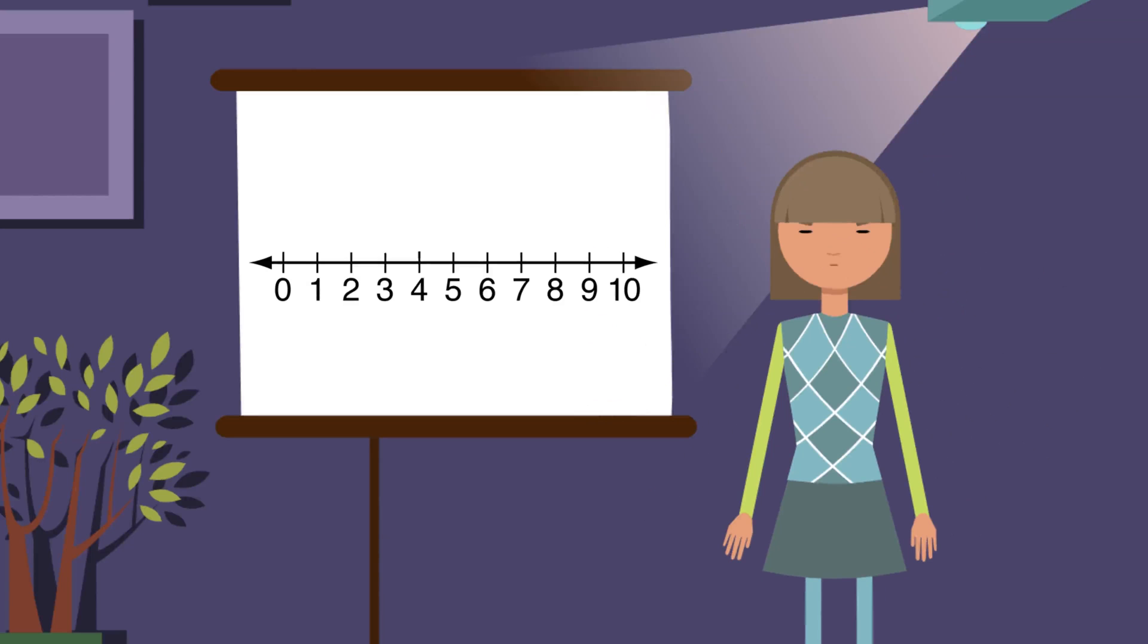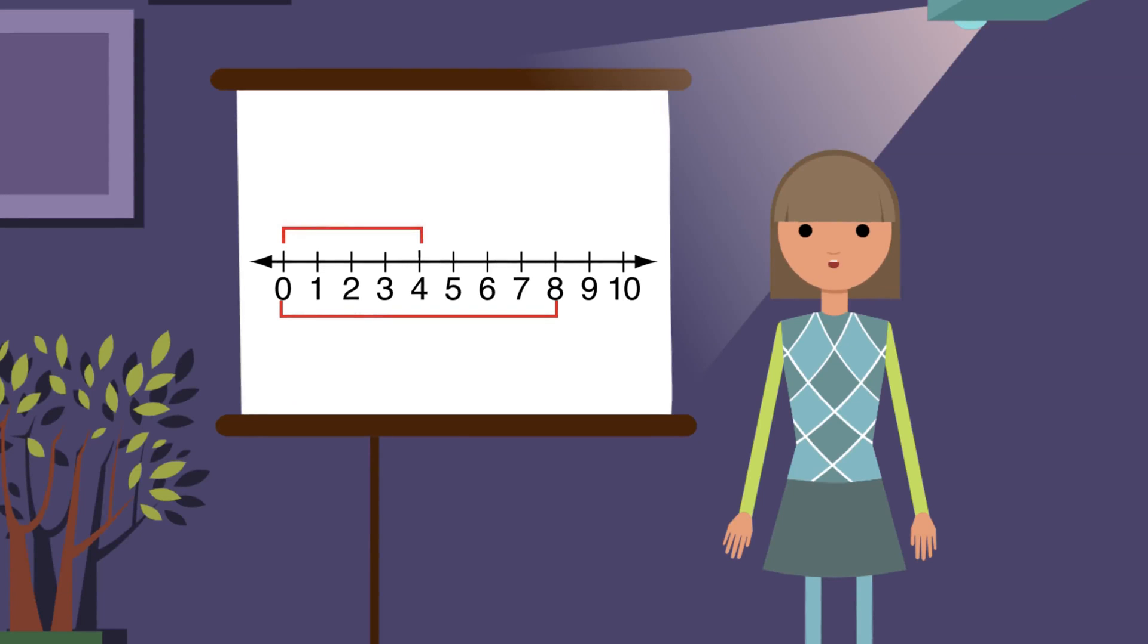Now compare the lengths of the lines. Which is bigger? You got it! The line from 0 to 8 is longer than the line from 0 to 4. This shows that 8 is bigger or worth more than 4.